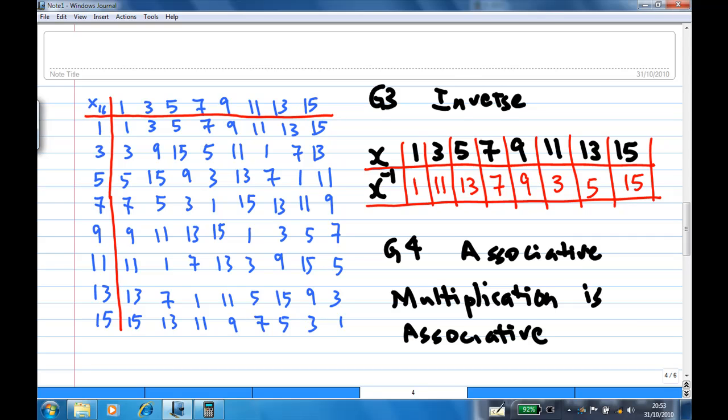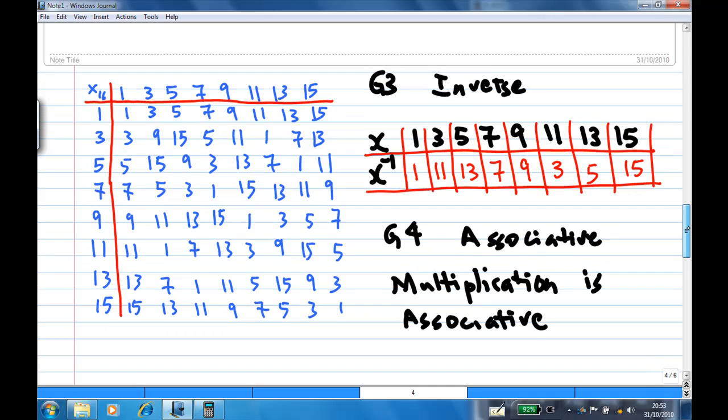So therefore, each element has an inverse. As for the fourth axiom, multiplication is always associative. So we need not to prove.